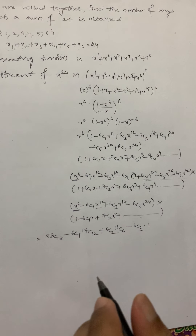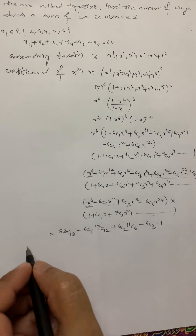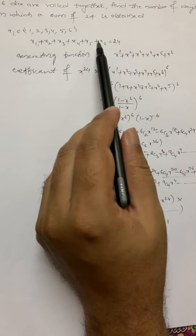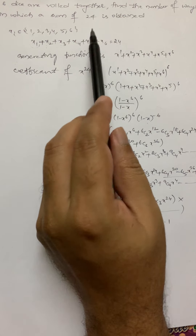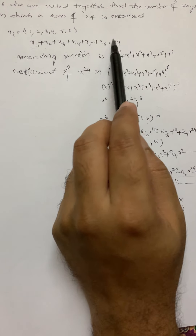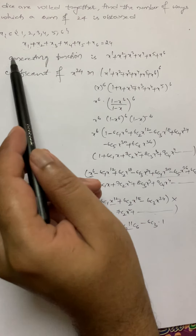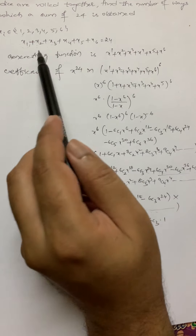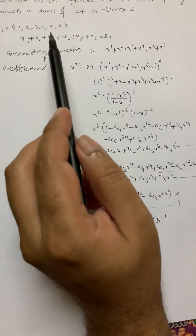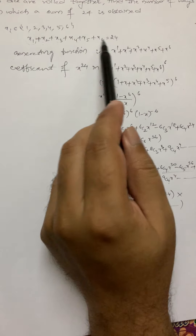This is a bit lengthy to calculate. So we will solve the same question in another manner. What is the maximum sum obtainable? It is 36, since 6+6+6+6+6+6 = 36. The least sum is 6. So the least is 6 and maximum is 36. Since 24 is closer to the largest value, we will solve this question by reconsidering the equation.